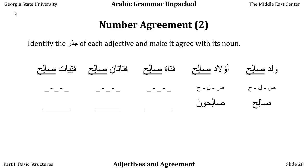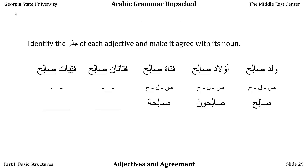We have fatat — fatat means young woman. To make her virtuous, since she's feminine singular, we add ta' marbuta: fatat saliha, a good girl or a virtuous young woman, depending on context.